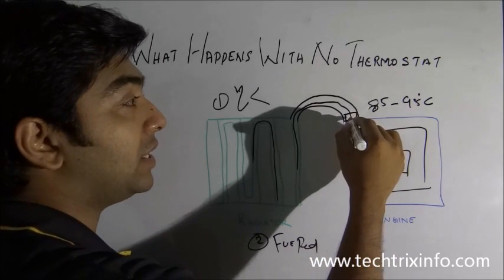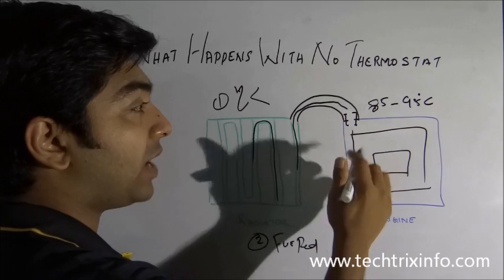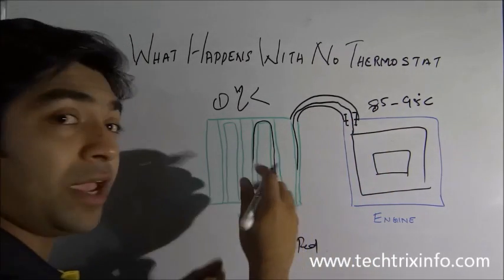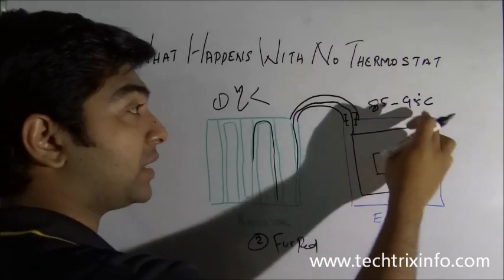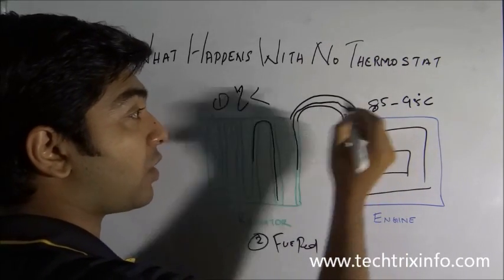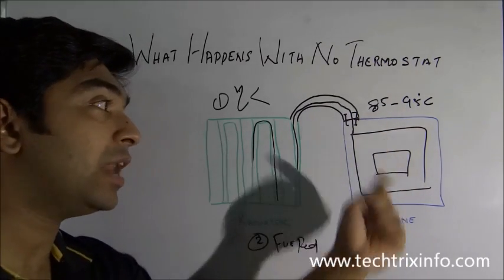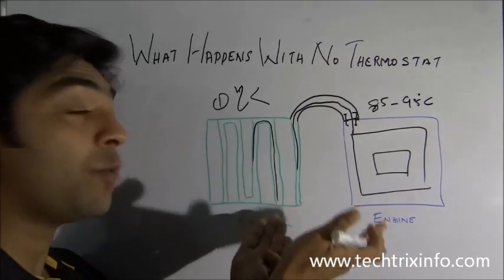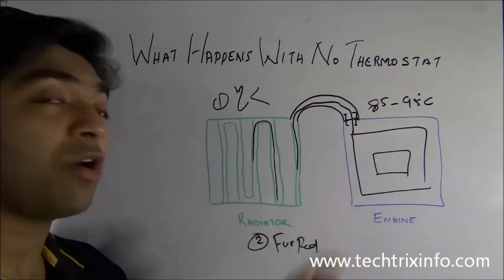When that particular range is exceeded, this thermostat will open and allow the coolant to pass through it to cool. When the engine comes back to this particular range, the thermostat will close again and will not allow the engine to further cool. So it maintains the optimum temperature of the engine.